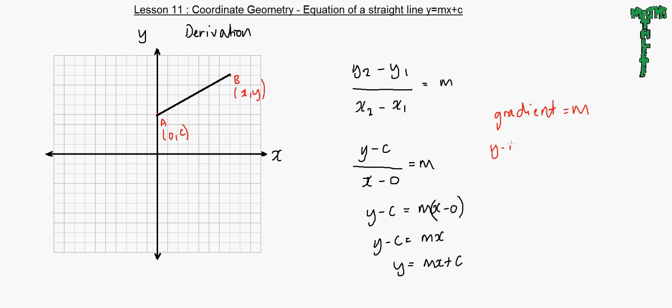And the y intercept, where the straight line which you have created intersects the y axis, which is called the y intercept, is in this case c.